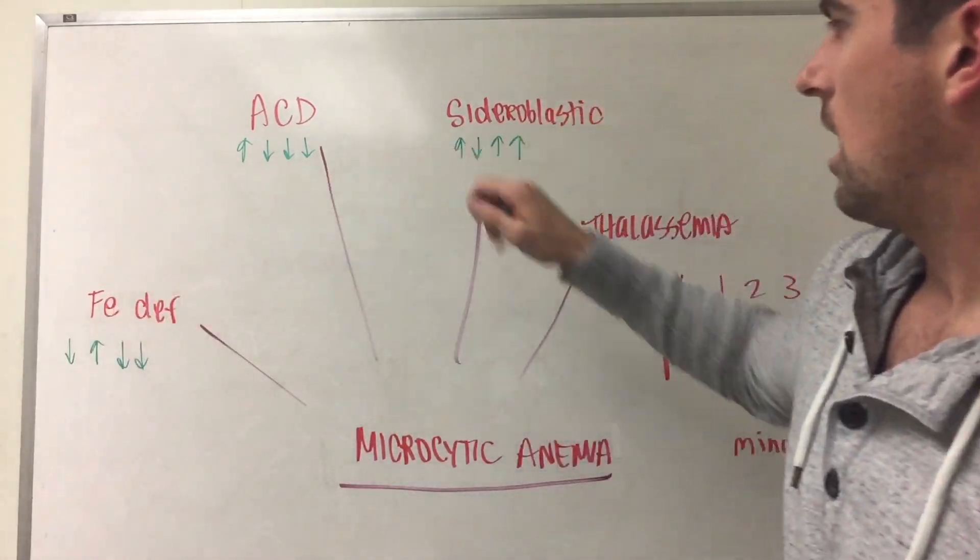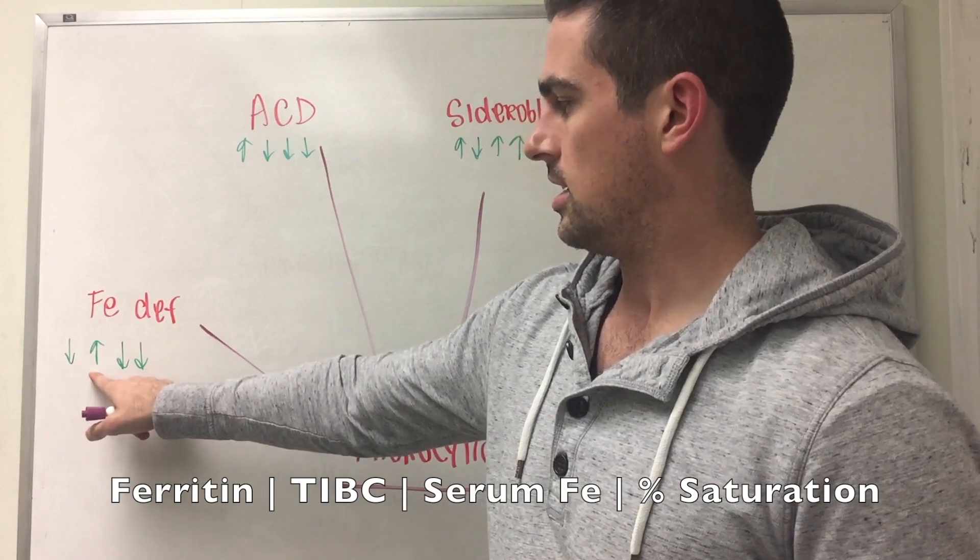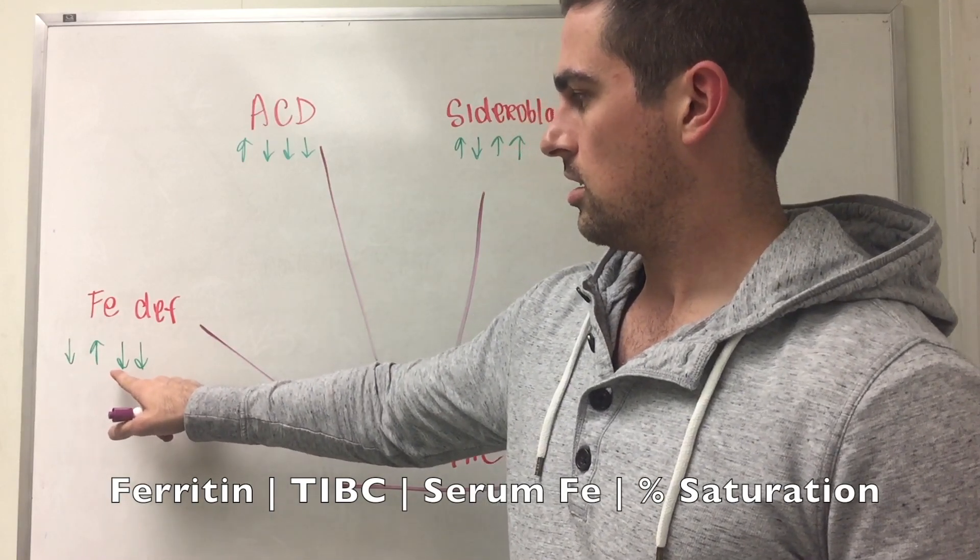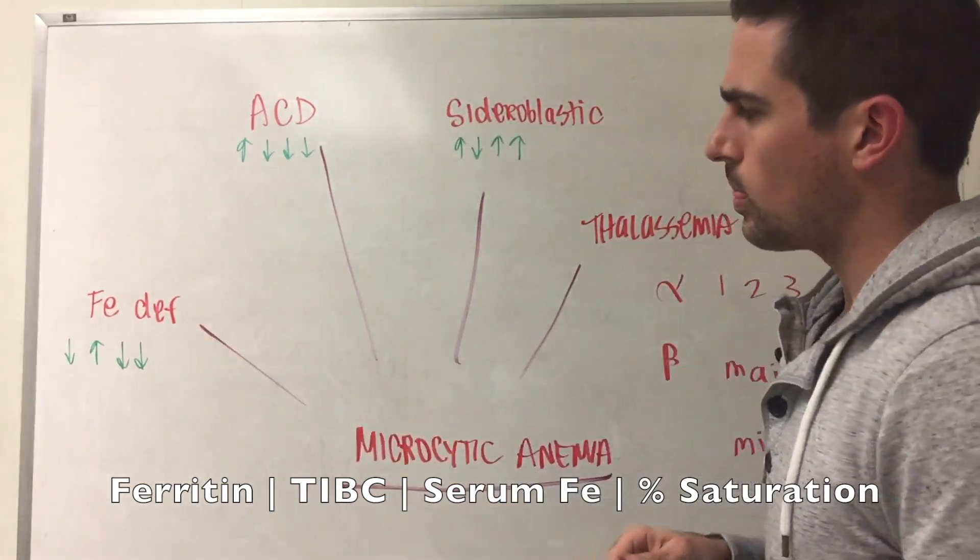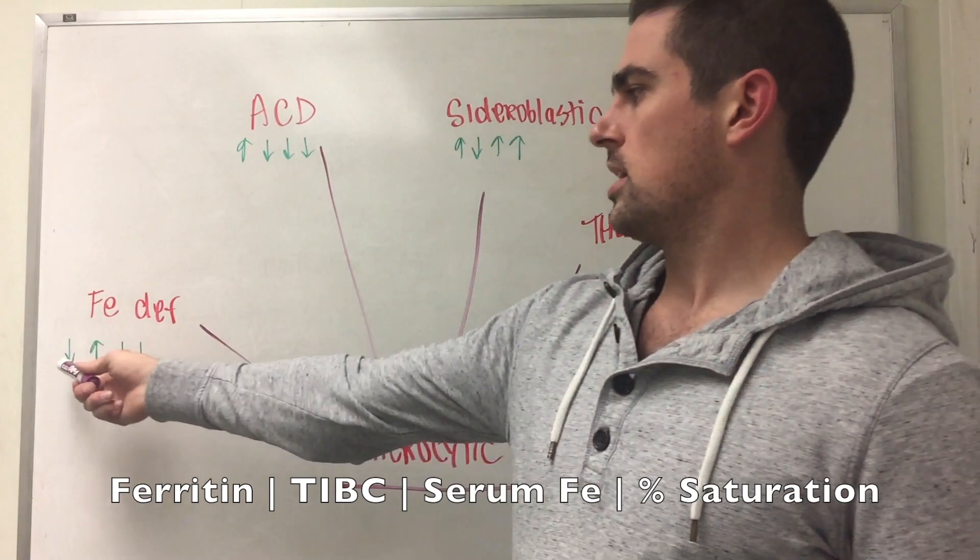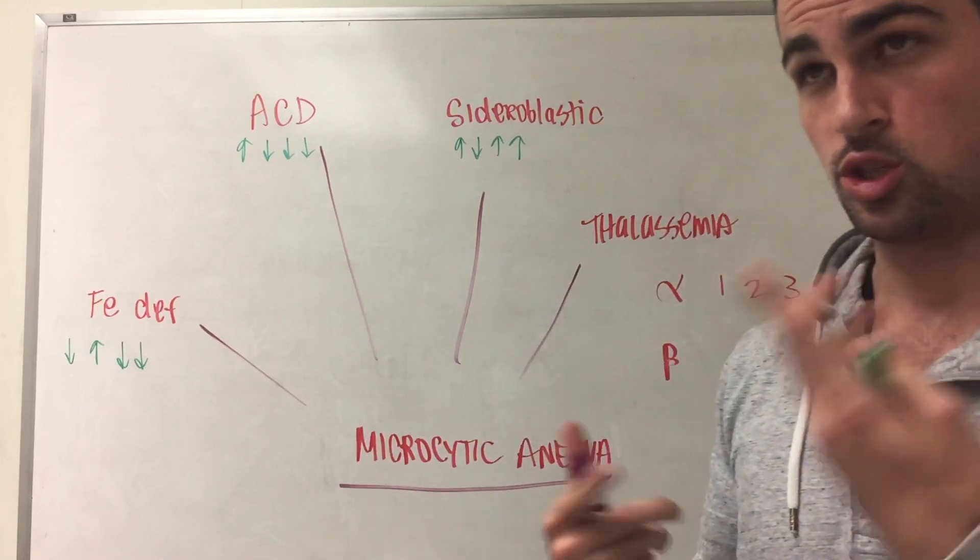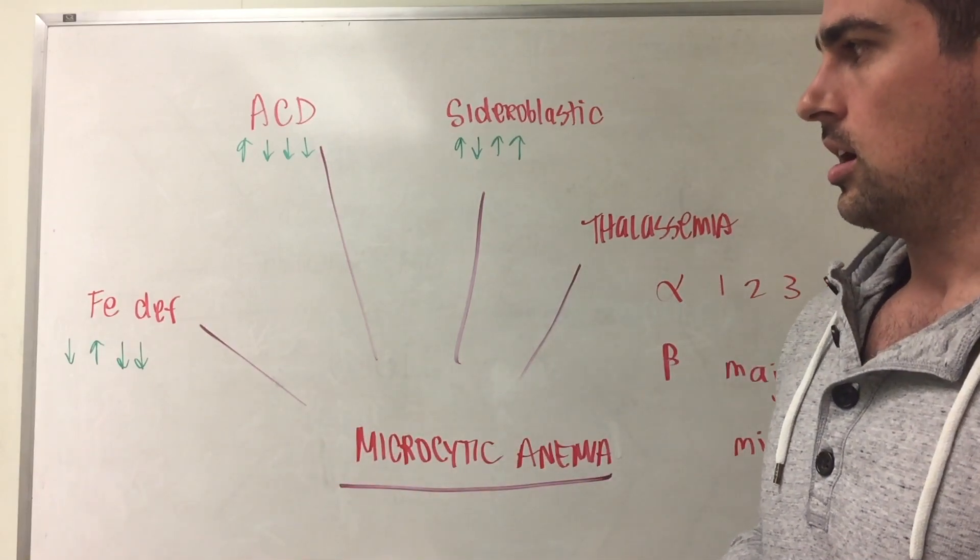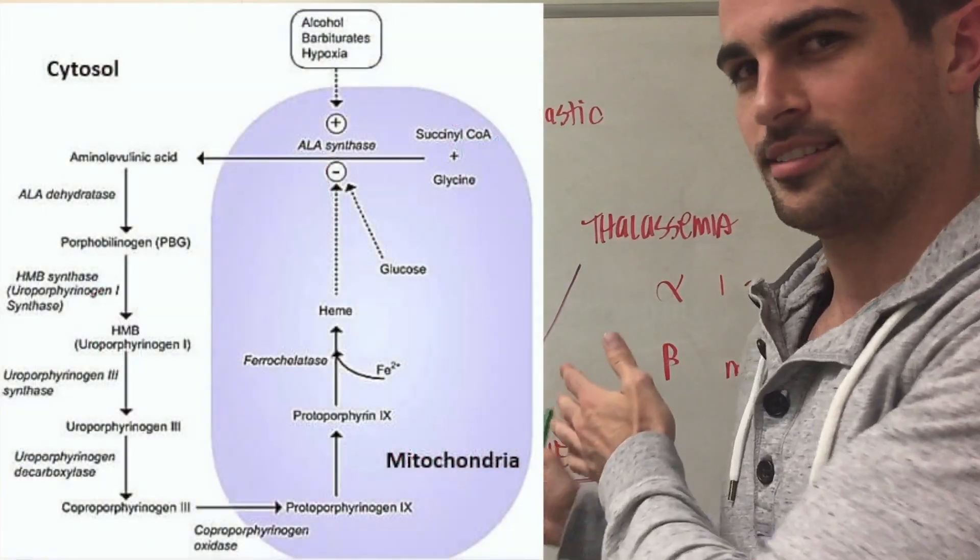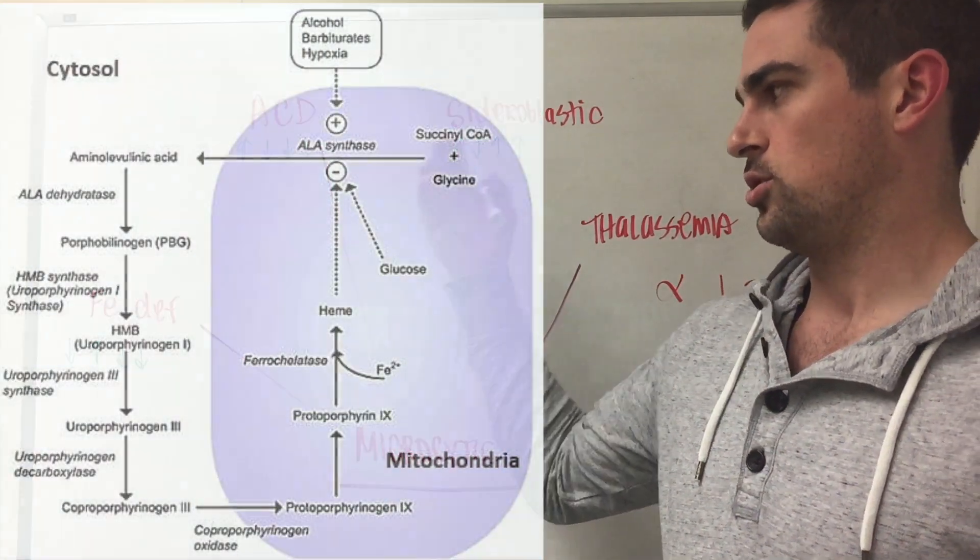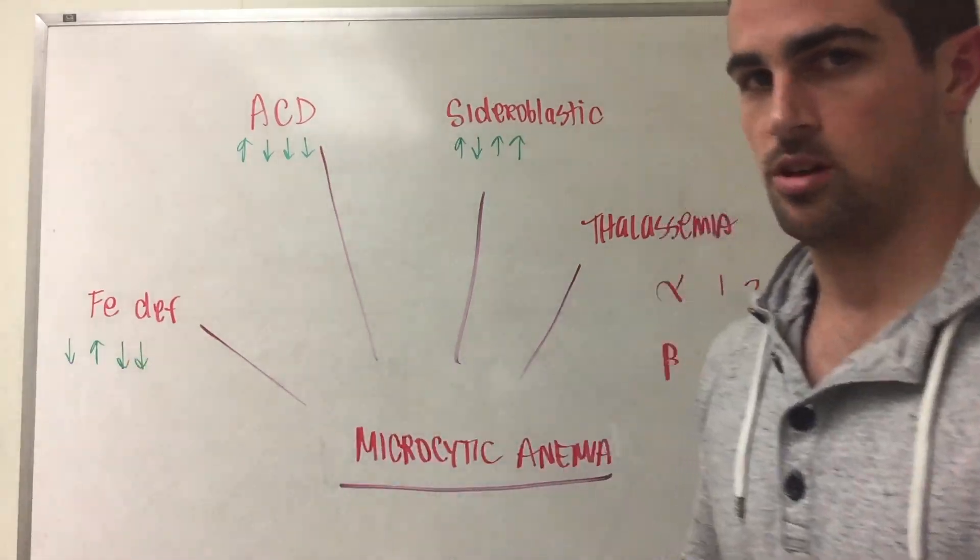These arrows I have here refer to serum ferritin, TIBC, serum iron, and percent saturation. You're going to have a decrease in your ferritin because ferritin refers to the store which is in the macrophage, and there's a decrease in storage because you don't have any more iron.